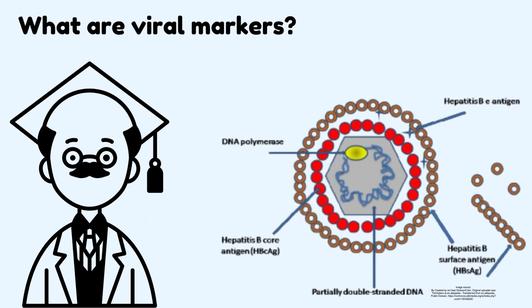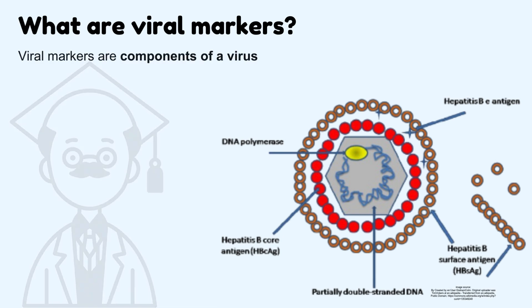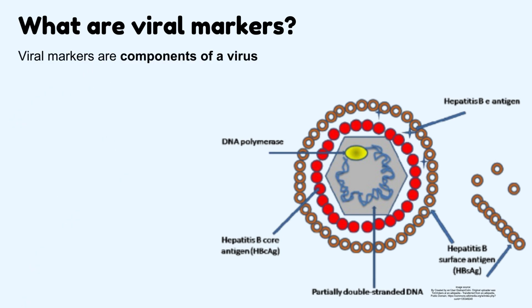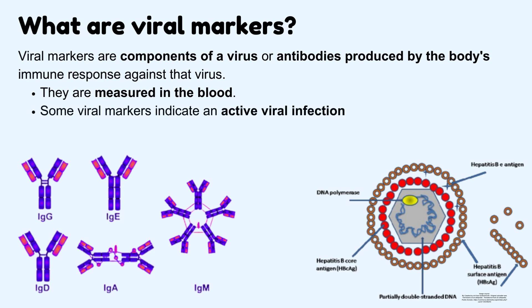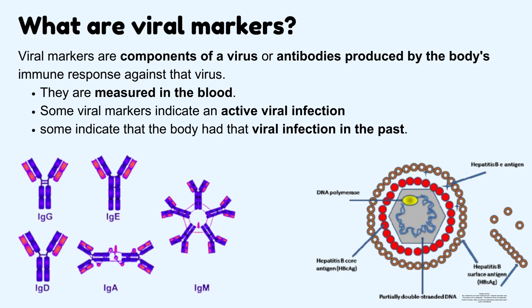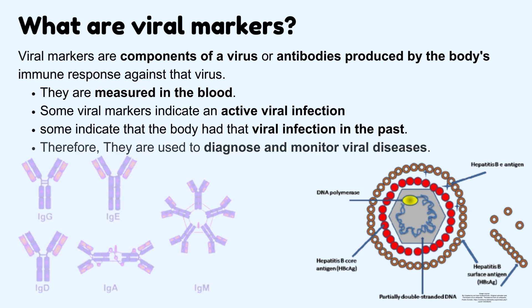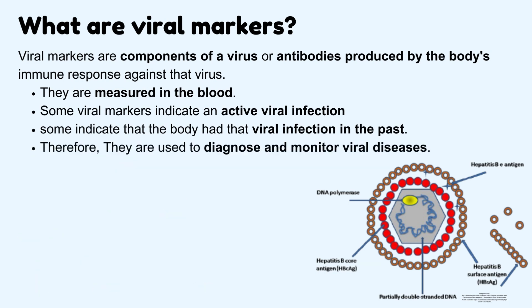Viral markers are components of a virus or antibodies produced by the body's immune response against that virus. They are measured in the blood. Some viral markers indicate an active viral infection, and some indicate that the body had that viral infection in the past. Therefore, they are used to diagnose and monitor viral diseases.